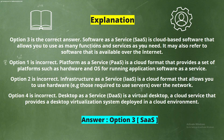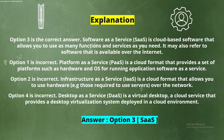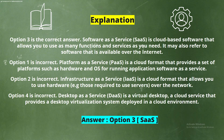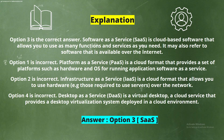Option 1 is incorrect — Platform as a service is a cloud format that provides a set of platforms such as hardware and OS for running application software as a service. Option 2 is incorrect — Infrastructure as a service is a cloud format that allows you to use hardware over the network. Option 4 is incorrect — Desktop as a service is a virtual desktop, a cloud service that provides a desktop virtualization system deployed in a cloud environment.